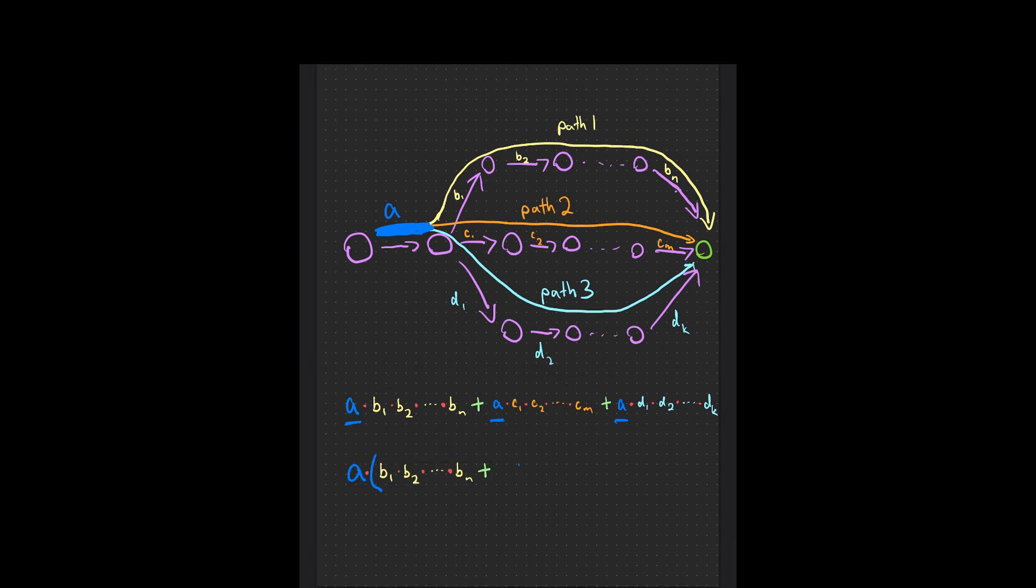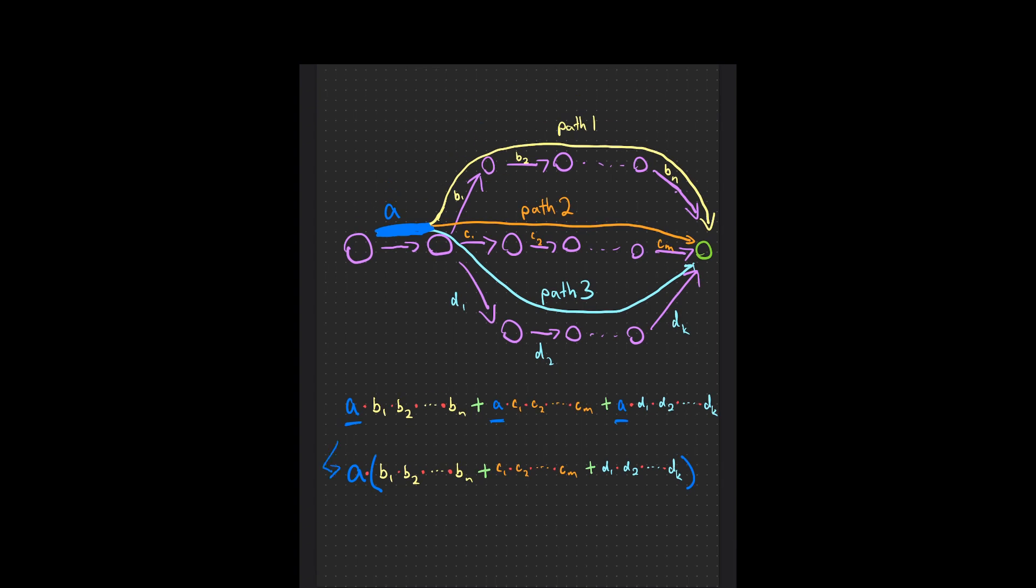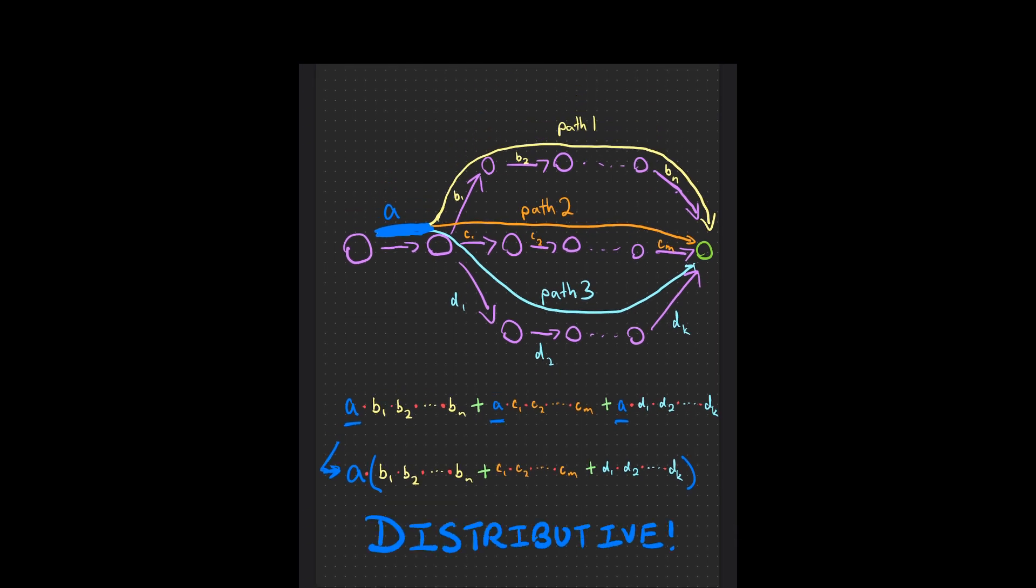Think about it this way. If you have a node that points into a node which then branches into multiple paths, how would you find the sum of the products of each edge value along each path? Well, for the first path, you do the first edge times the second edge times the third edge and so on. And for the second path, you do the first edge times the second edge times the third edge and so on. But the cool thing is that the first edge is the same for every path.